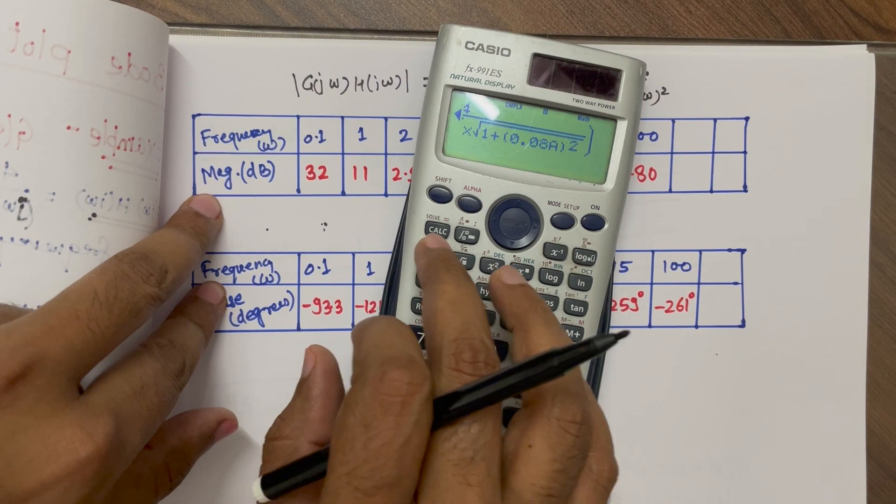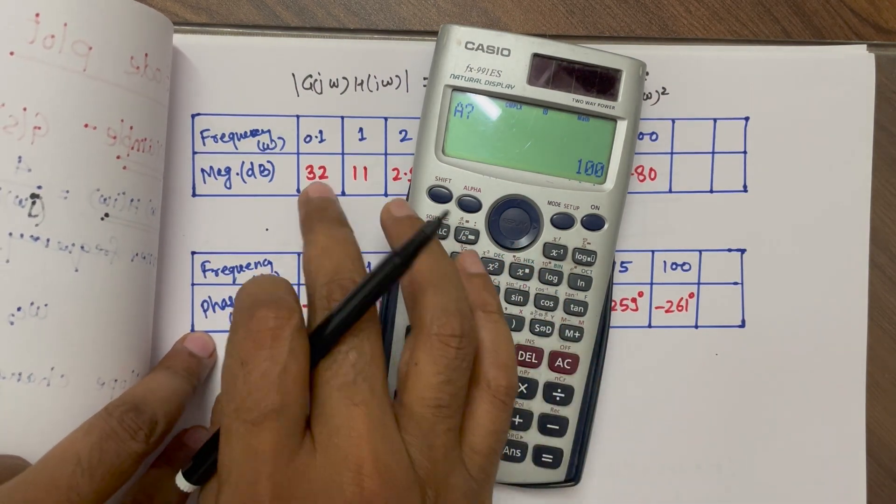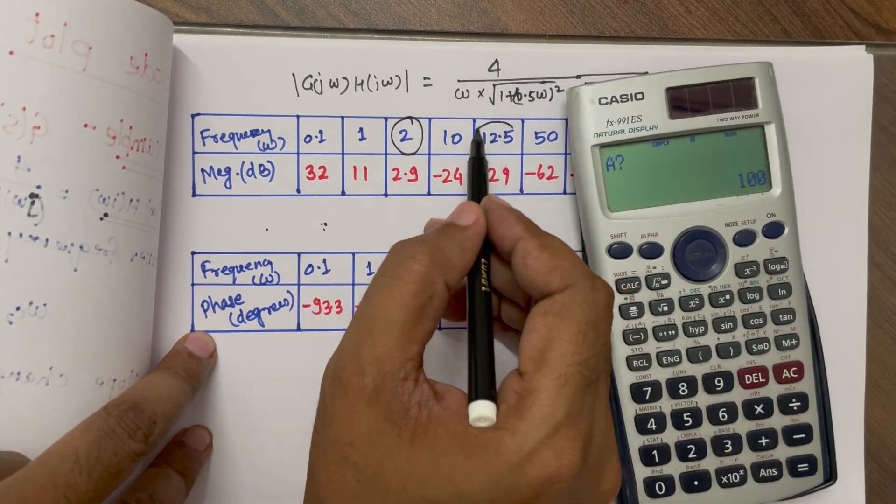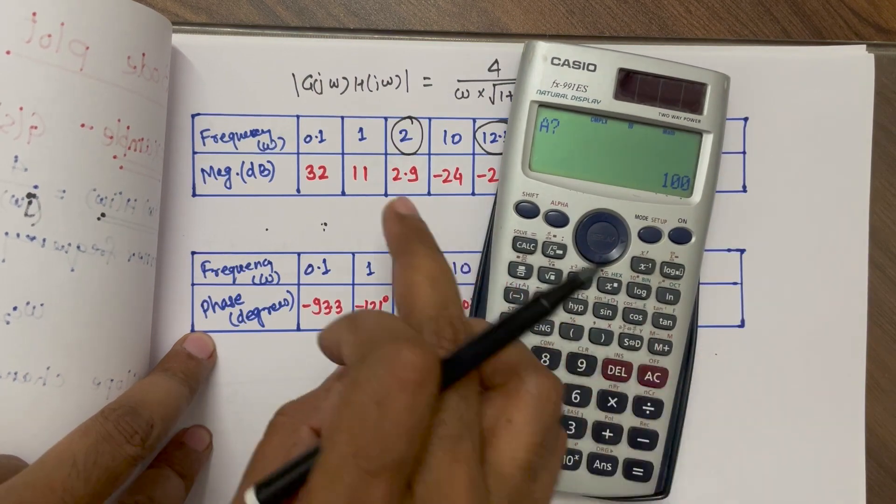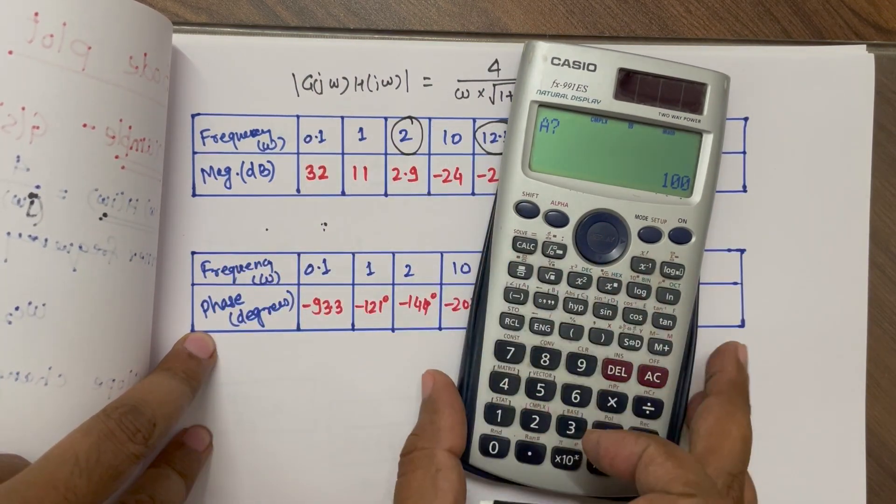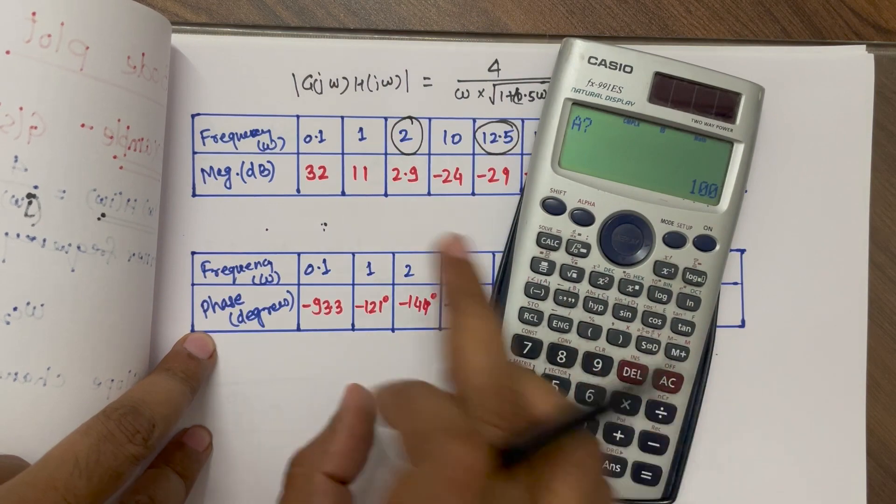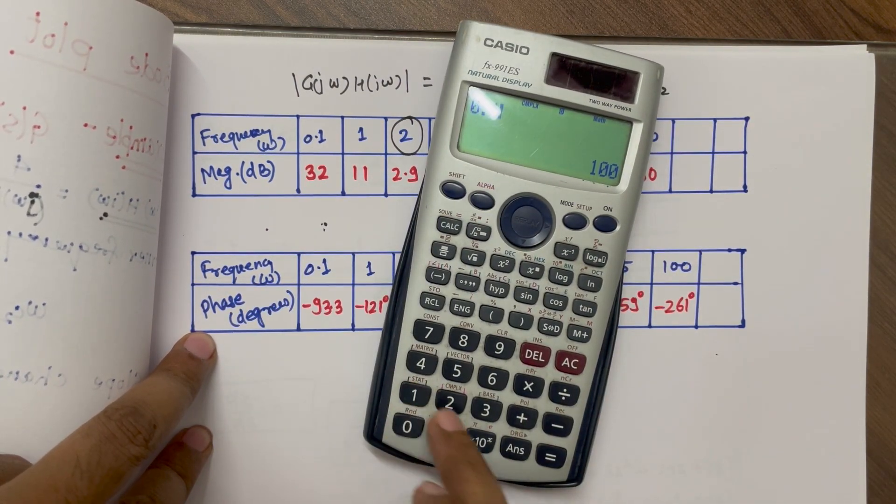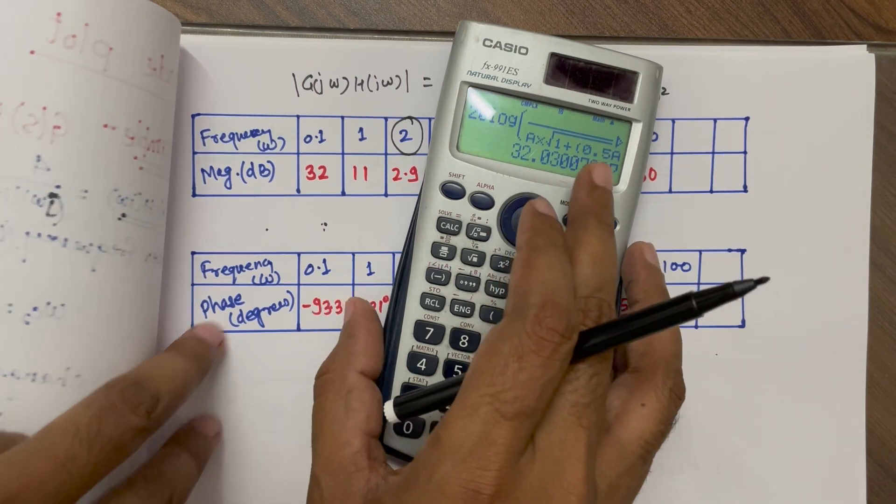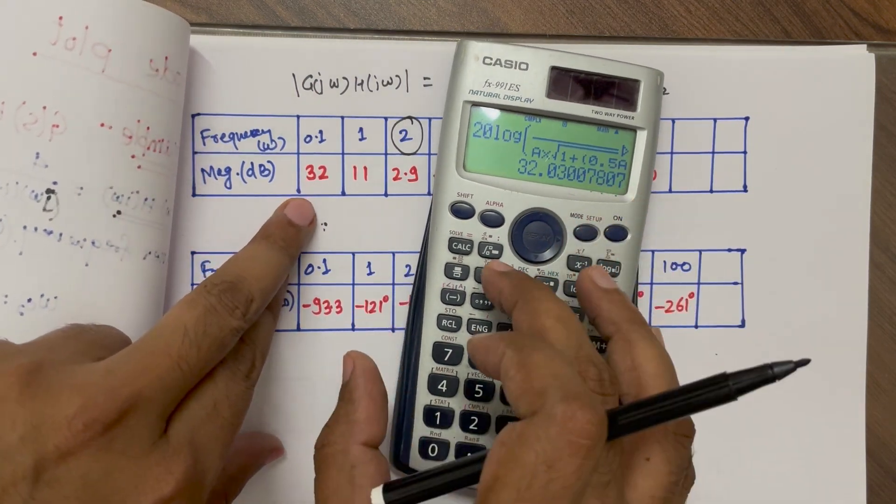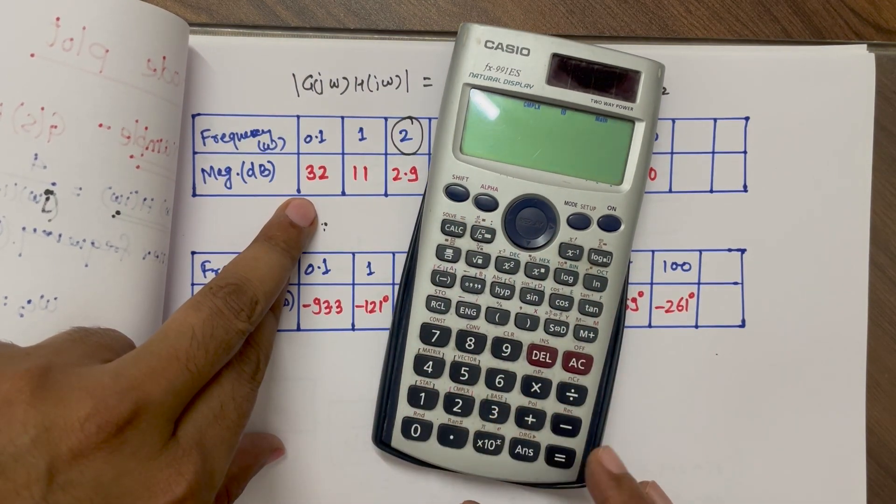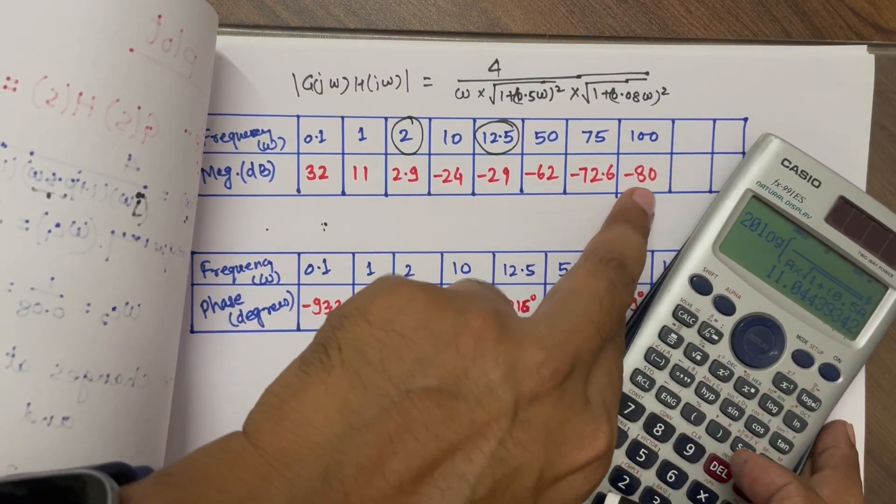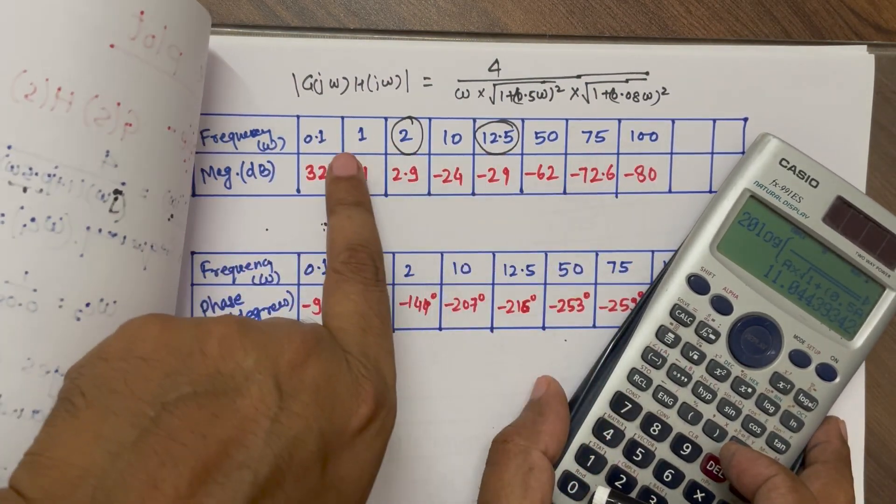Now, we will calculate. So for calculating, just press calc and put some value which is less than the corner frequency. Our corner frequency are these two. So less than that, we can put. We can start from 1 also. We can start from 0.1. That is our wish. So based on these values, we are going to put this code, the scale. So 0.1, we are getting 32 dB. So that's how I have written. Similarly, I just keep on changing the values. I will be getting further 11. So this is how I have written all the values for all these frequencies.